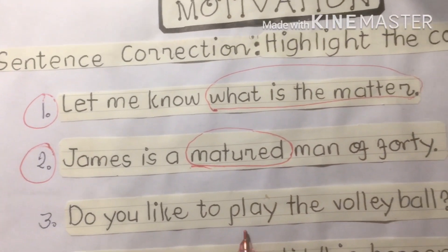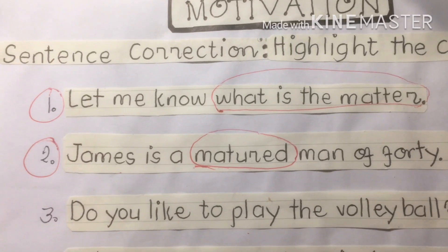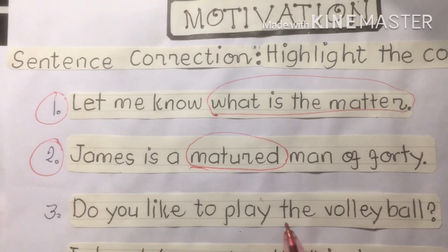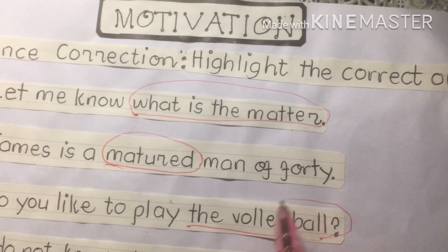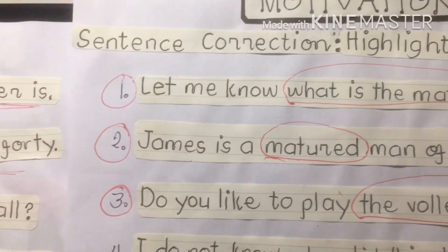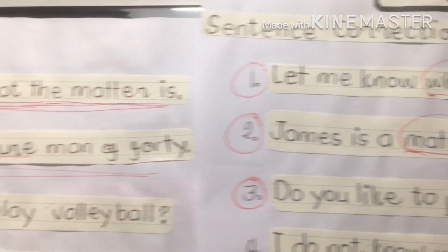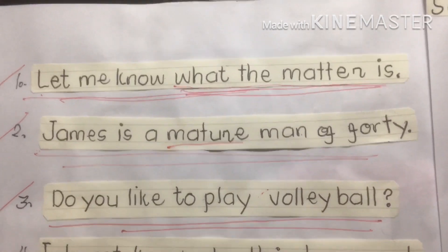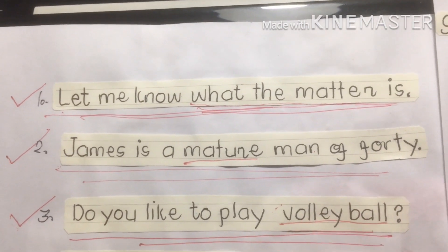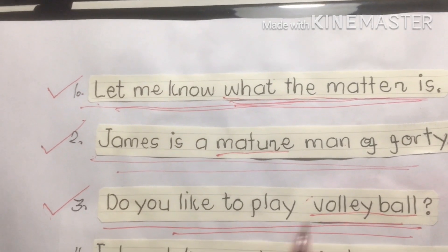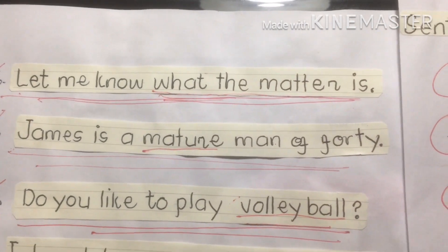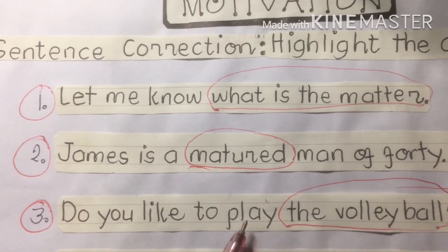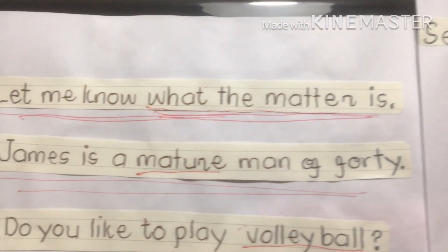Three: 'Do you like to play the volleyball?' This sentence is incorrect because of the word 'the' before volleyball. The right one is: 'Do you like to play volleyball?' — without 'the.' So 'the volleyball' is the incorrect form, and 'volleyball' without the article is the correct sentence.